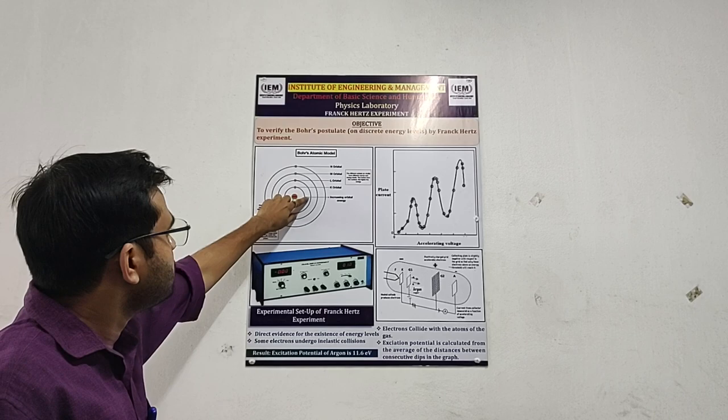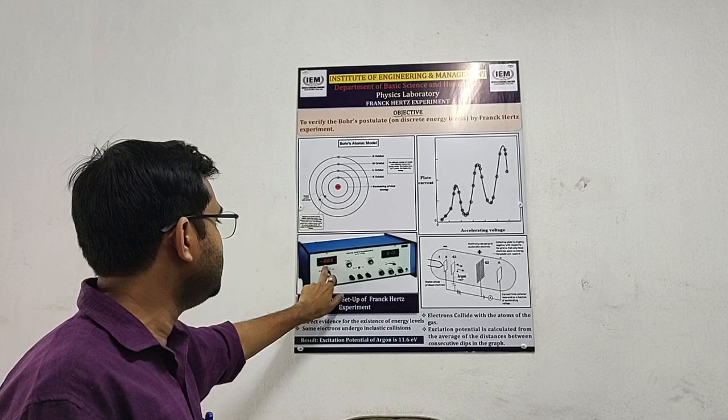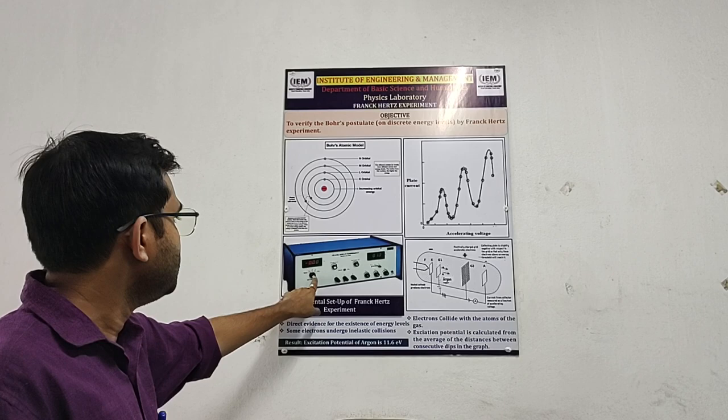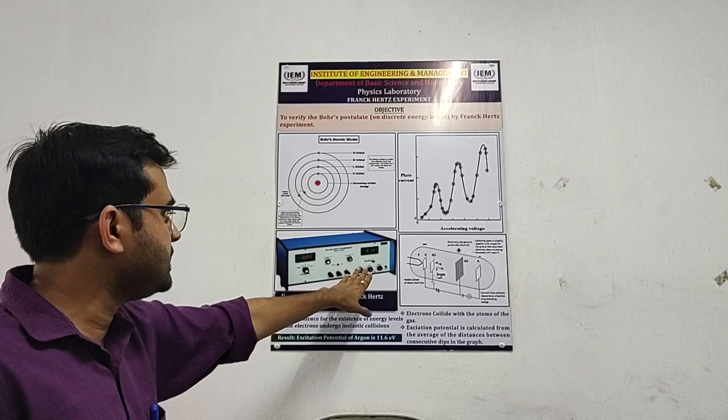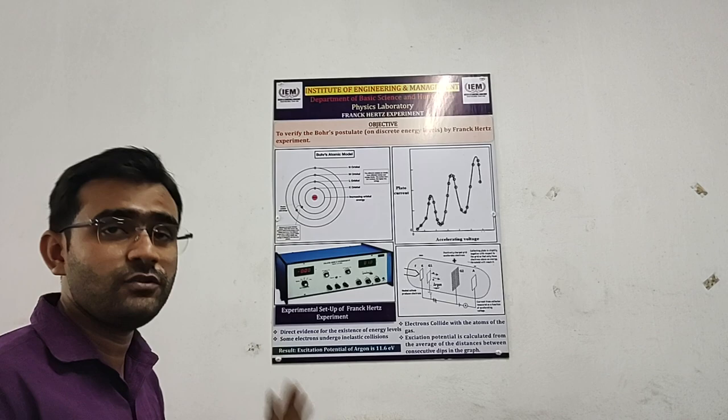Now here this is the Franck-Hertz experimental setup. Inside this, this will give you the current flowing through the circuit. This will give you the voltage drop across different points. Now you can see here there is a multiplier in the current section. For a particular voltage or particular position, if I am not getting any value over there, we need to change the multiplier from one position to another and check whether value is coming.